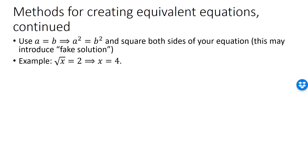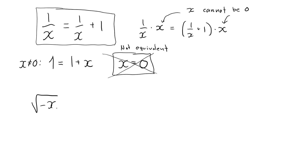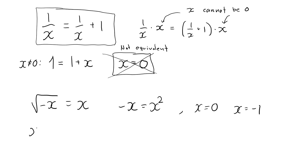Consider the equation √(−x) equals x. Squaring both sides gives −x equals x², which has solutions 0 and −1. However, −1 is a fake solution: for x equal to −1, the left-hand side becomes 1 and the right-hand side becomes −1. The original equation has only one solution, namely x equals 0.